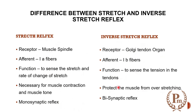For inverse stretch reflex, the Golgi tendon organ 1B fibers synapse onto an inhibitory interneuron, which is glycinergic — releasing glycine as an inhibitory neurotransmitter. This in turn inhibits the alpha motor neuron, so instead of contraction, the muscle has relaxation.